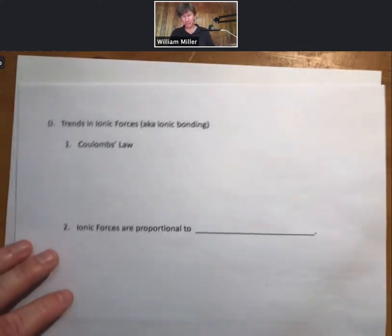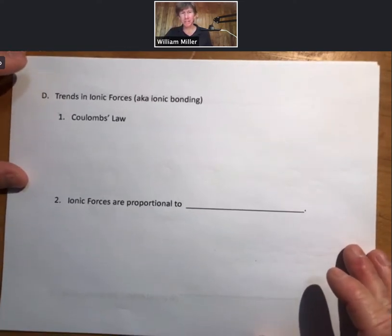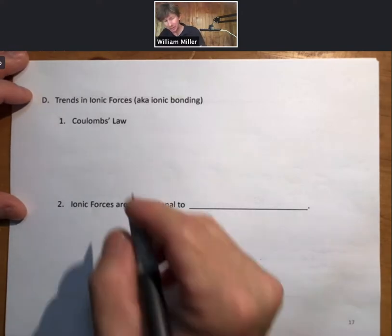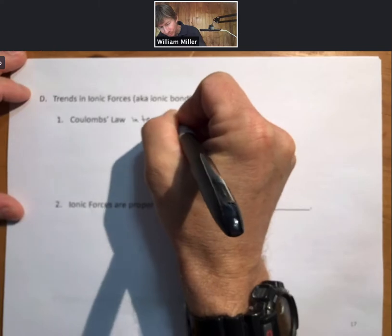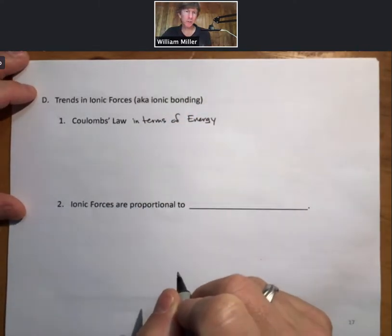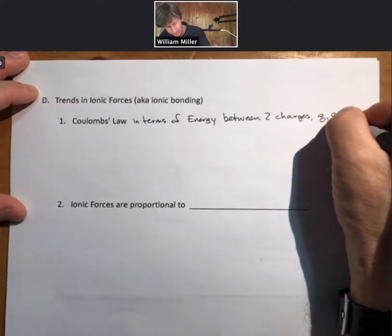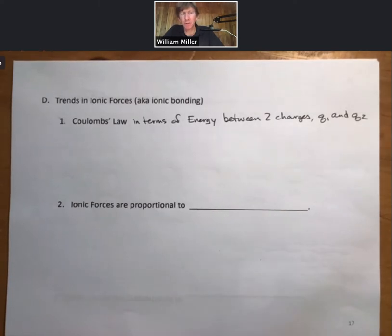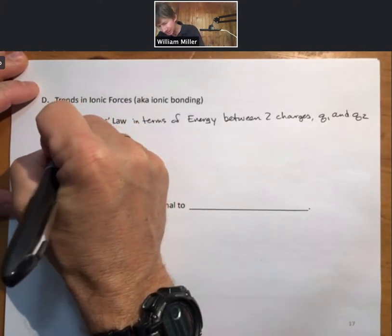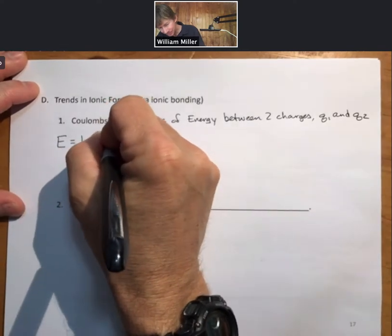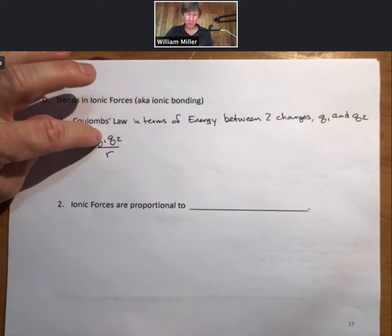Now, let's talk some more about trends in ionic forces. These are the same as the trends in the strength of ionic bonds. To do that, we'll relate to something in physics like we have done in the past. This is going to be Coulomb's Law in terms of energy between two charges. And Q in chemistry, lowercase q, means two things to us. It means an amount of energy when we're talking about thermochemistry. And when we're talking about charges, it is the charge.